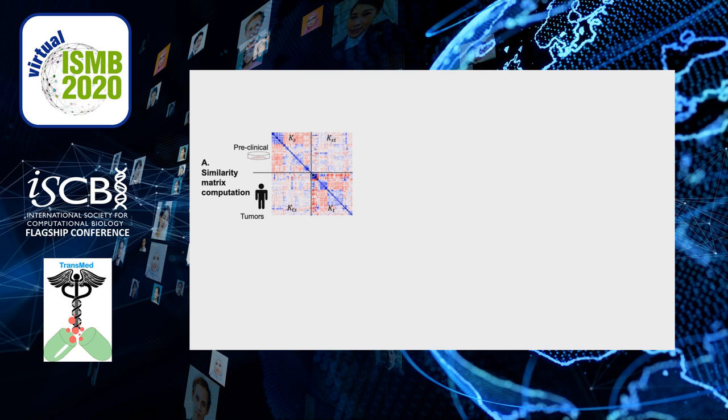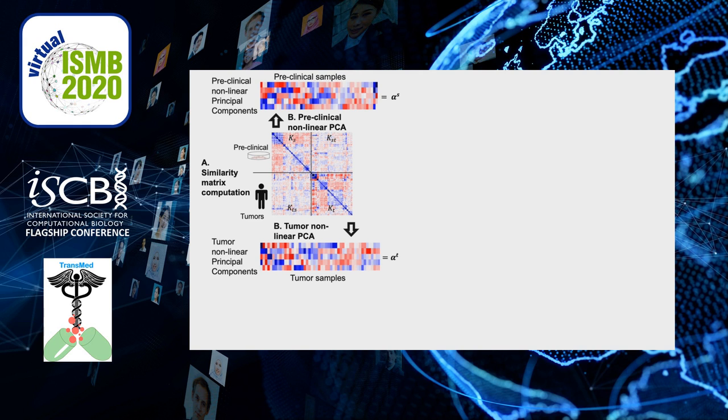The first thing we do with PrecisePLUS is to compute the similarity between preclinical samples, between tumors, and across datasets — these four matrices here. The similarity, or the kernel, is something that you fix beforehand. We then use preclinical and tumor data in two batches, and with kernel PCA we reduce the dimensionality, computing a batch of preclinical non-linear principal components and a batch of tumor non-linear principal components, represented by matrices alpha-S and alpha-T.